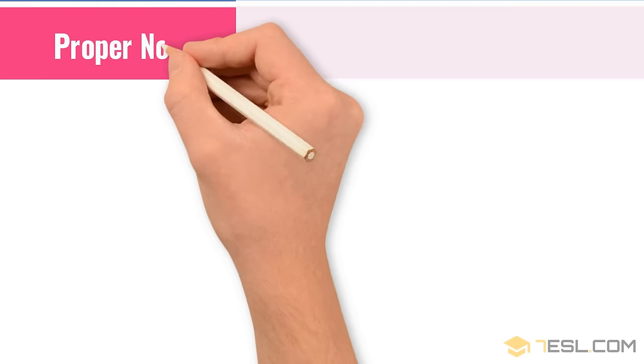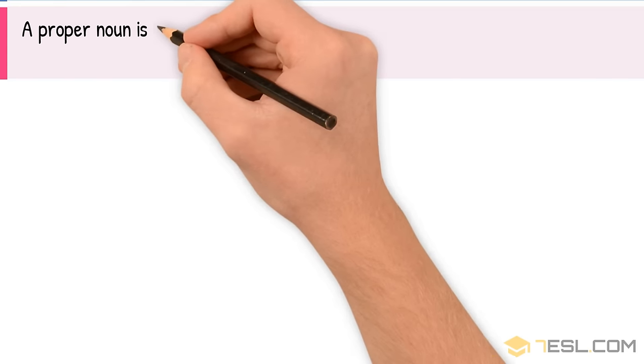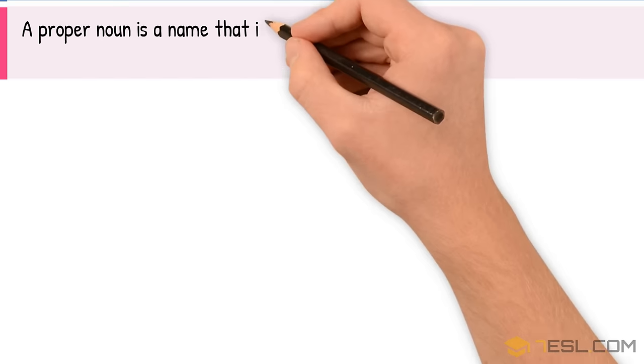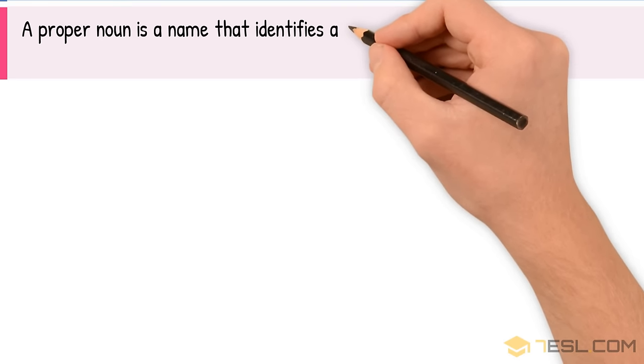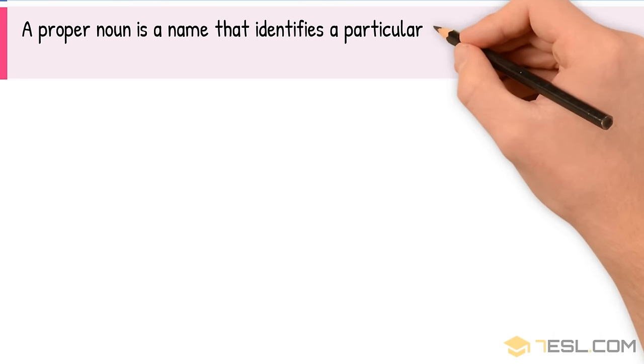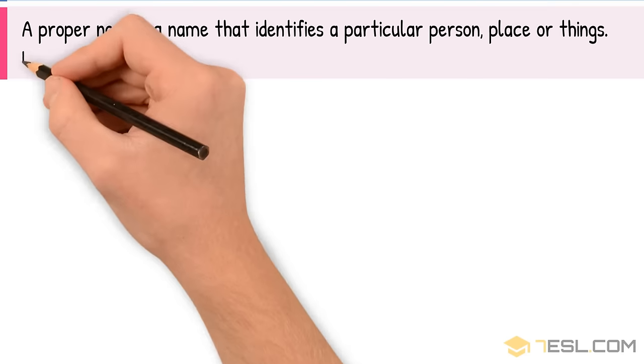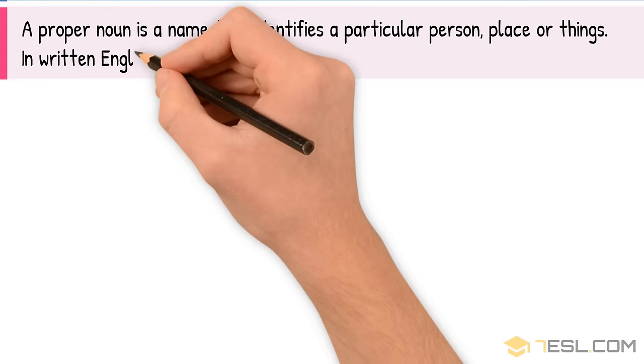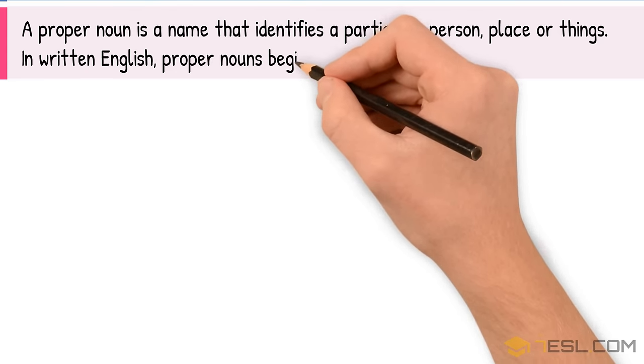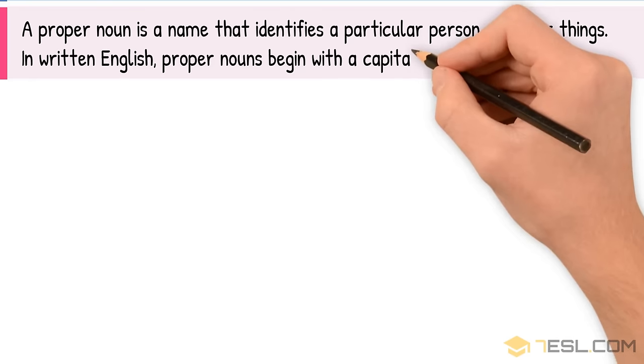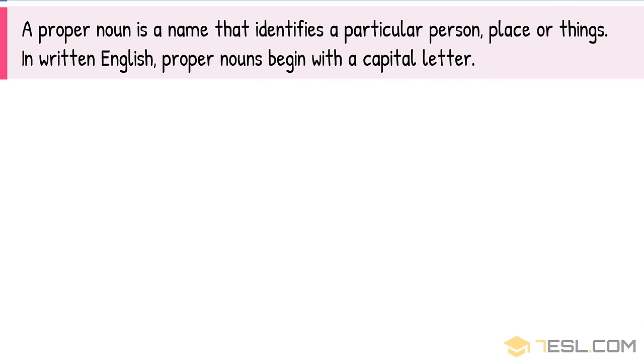Proper Noun. A proper noun is a name that identifies a particular person, place, or things. In written English, proper nouns begin with a capital letter.